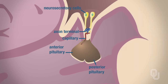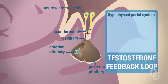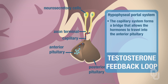Once gonadotropin-releasing hormone is produced, it has to enter into the bloodstream and travel down this capillary. The name of this structure through which gonadotropin-releasing hormone travels is called the hypophyseal portal system. The hypophyseal portal system is basically a bridge — it's the capillary system through which the releasing hormones from the hypothalamus can travel to the anterior pituitary.